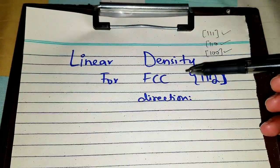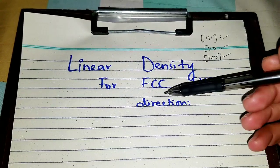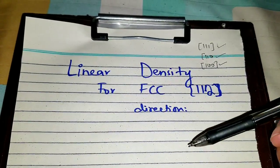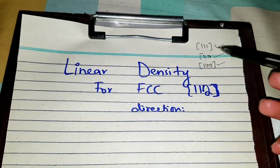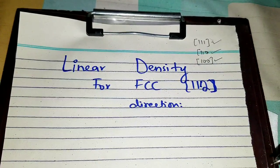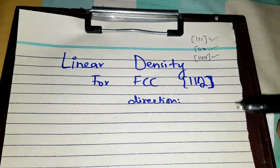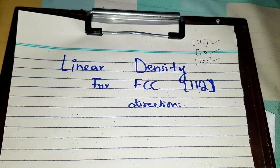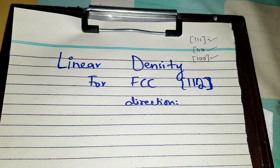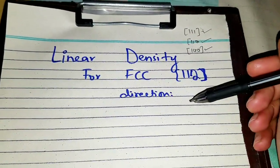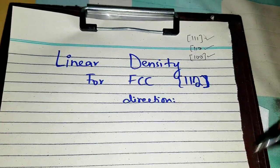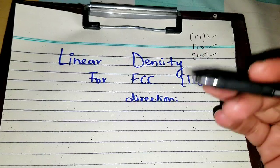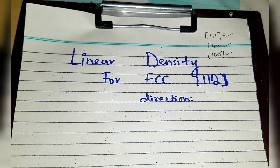Hello everyone, I hope you're doing well. This video is about finding the linear density for the FCC [112] direction. The video for linear density of conventional directions is already uploaded — you can check the link in the description box. Videos are uploaded for both BCC and FCC lattices separately. This is a requested video, and if any of you have any problem or query, you can ask in the comment section and I will address it as soon as possible.